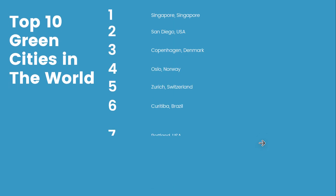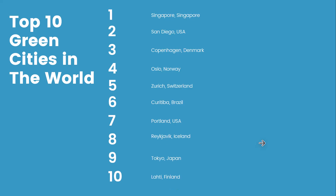Here are the top 10 green cities in the world, as considered by many experts: Singapore, San Diego (USA), Copenhagen (Denmark), Oslo (Norway), Zurich (Switzerland), Curitiba (Brazil), Portland (USA), Reykjavik (Iceland), Tokyo (Japan), and Lahti (Finland).